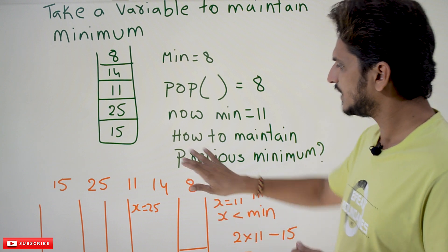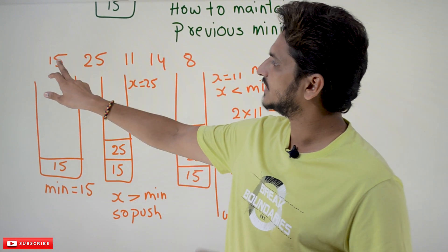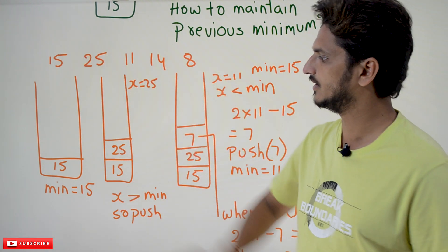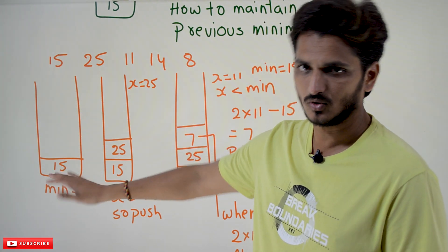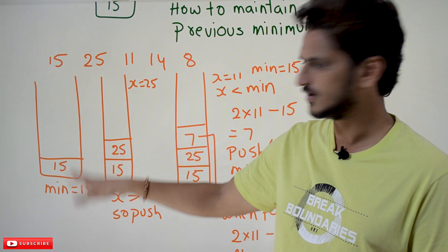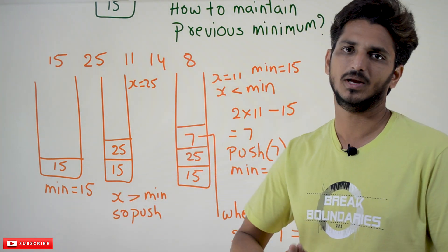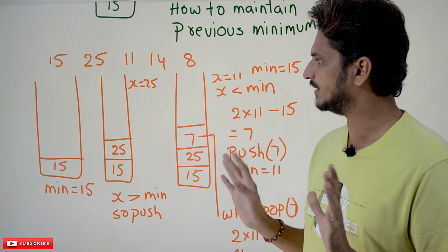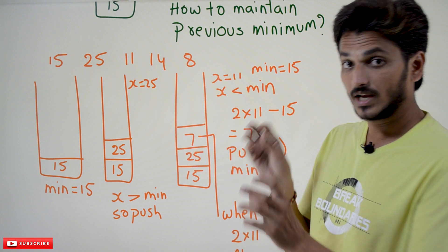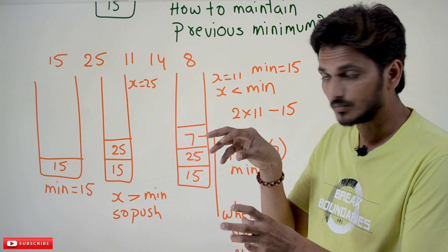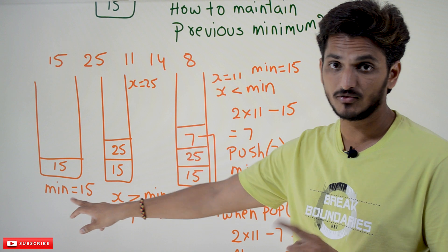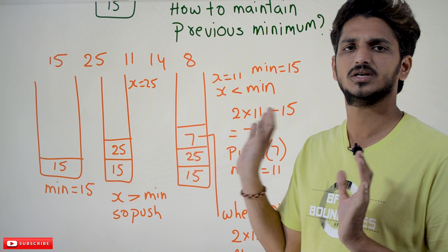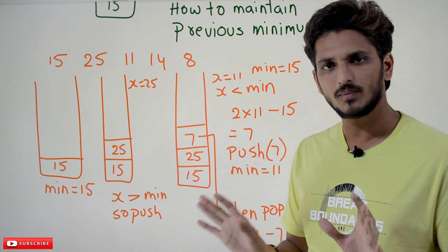We go step by step. Take this example: 15, 25, 11, 14, 18. The first element you are going to push is 15. Initially the stack is empty. Whenever the stack is empty, push the element onto the stack. The minimum element is 15. Now the second element is 25. When pushing 25, the minimum element in the stack is 15. Is 25 greater than the minimum element? Yes. So push it directly. After pushing, the minimum element is still 15.